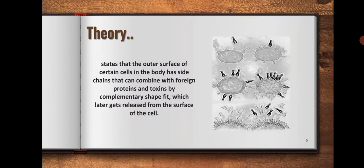The theory states that the outer surface of certain cells in the body has sidechains that can combine with foreign proteins and toxins by complementary shape fit, which later gets released from the surface of the cell.